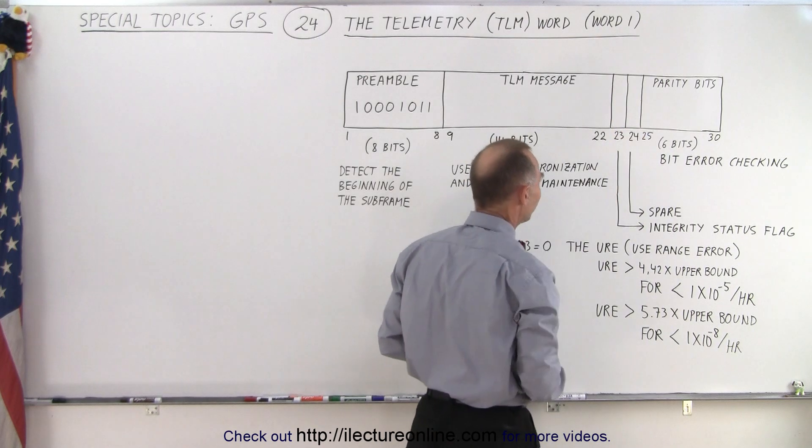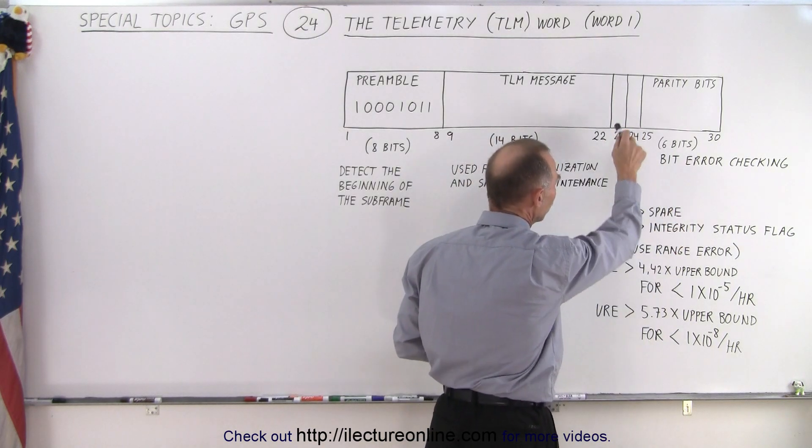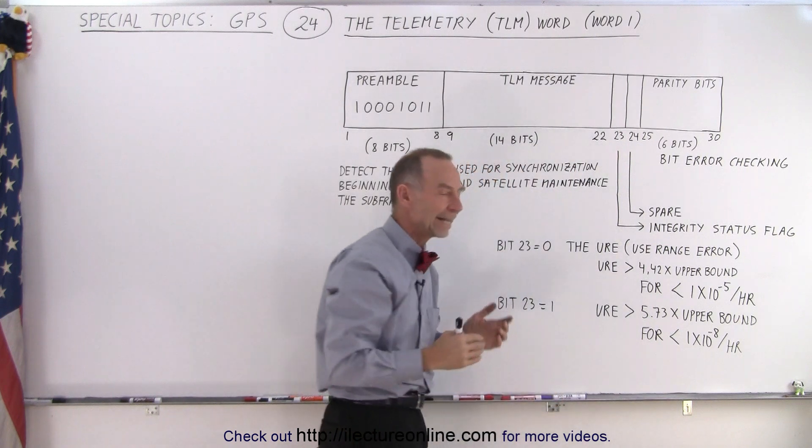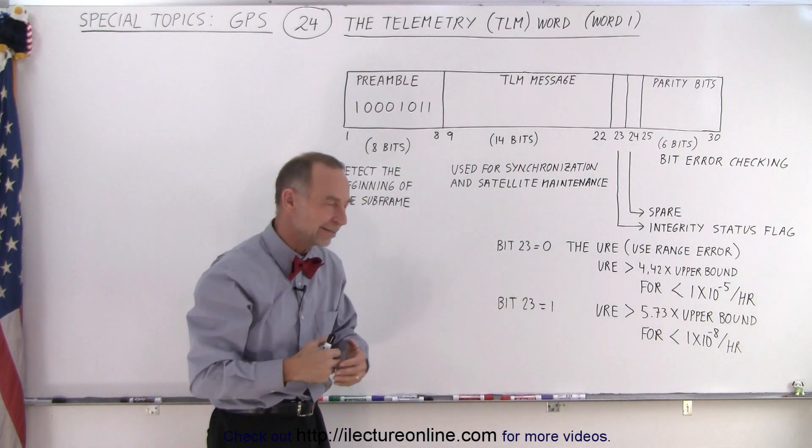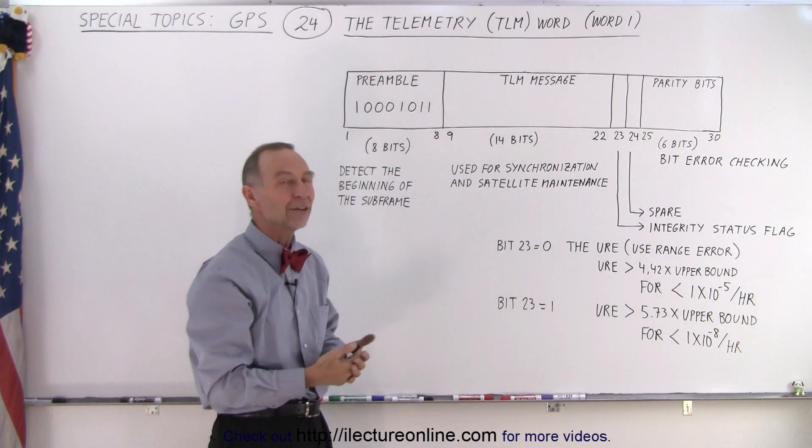23 and 24. Now 24 is a spare bit and 23 is what we call the integrity status flag, and it's put in an interesting way.